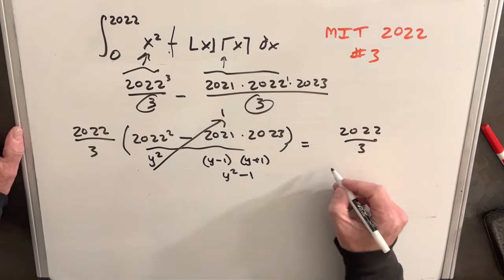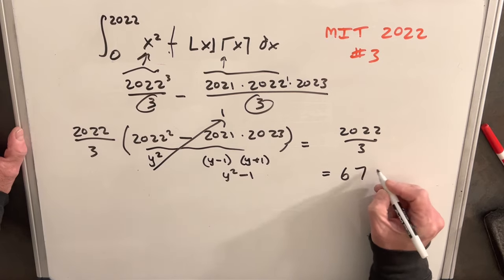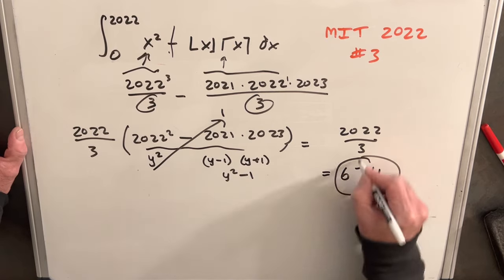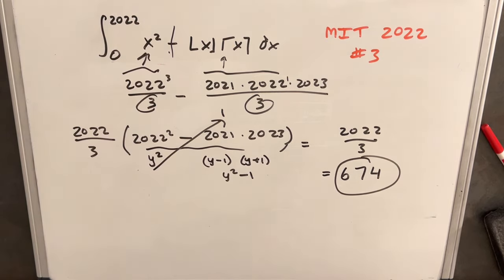What that means is this whole inner term is just going to be 1, which means all we need to do is evaluate 2022 over 3. If we divide that, we come up with our final answer, which is 674. And that's it. MIT Integration B 2022, that was problem number 3. Thanks for watching.